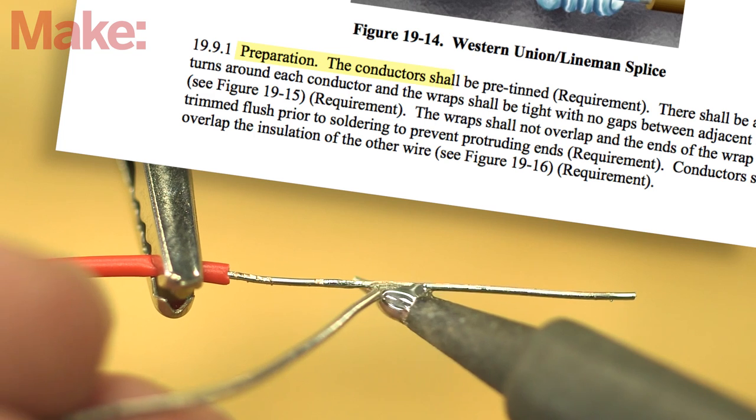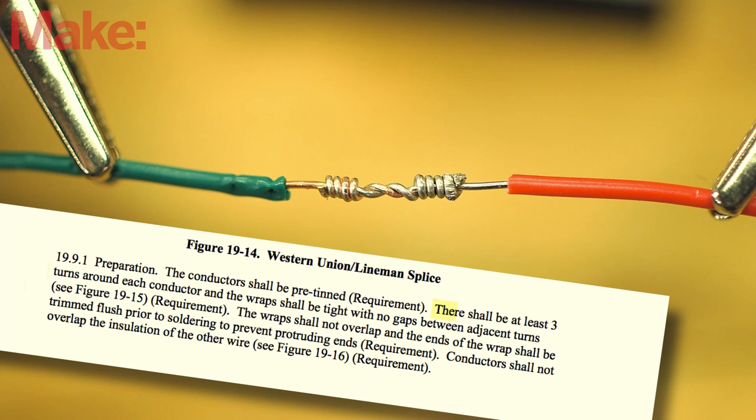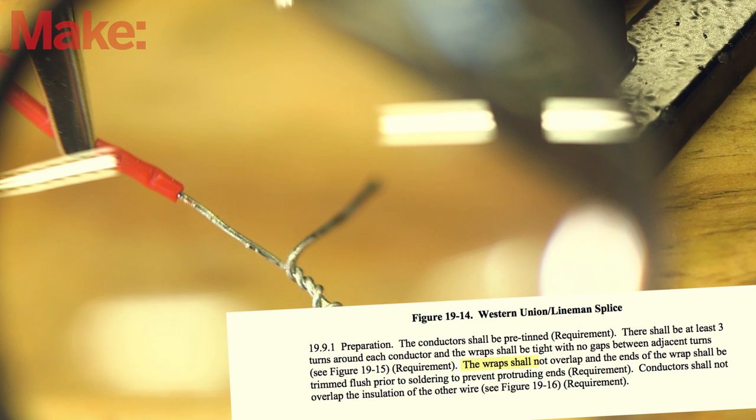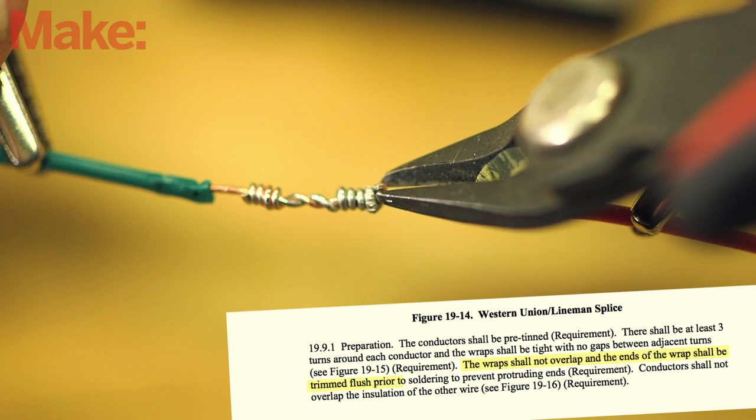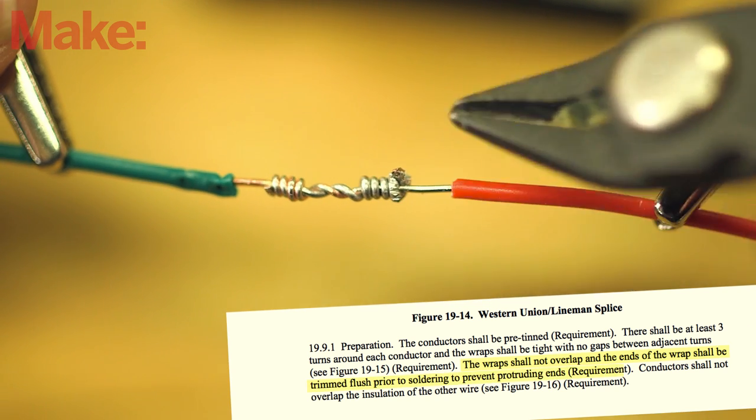The conductor shall be pre-tinned. There shall be at least three turns around each conductor, and the wrap shall be tight with no gaps between adjacent turns. The wrap shall not overlap, and the ends of the wrap shall be trimmed flush prior to soldering to prevent protruding ends.